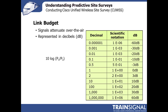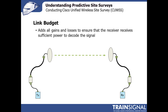A link budget is a bit like doing a financial plan — you've earned this money this month and you have to pay these bills; do you have any money left at the end of the day? Same thing with a link budget. So in this example, the transmitter is transmitting at 18 dBm. If using an external antenna, there will be loss as the signal travels up the cables and through any connectors between the transmitter and the antenna, so you subtract that attenuation from your budget.